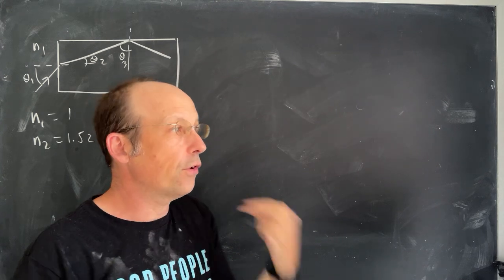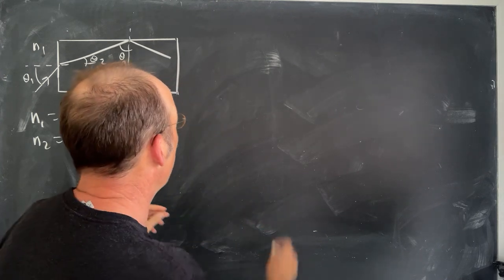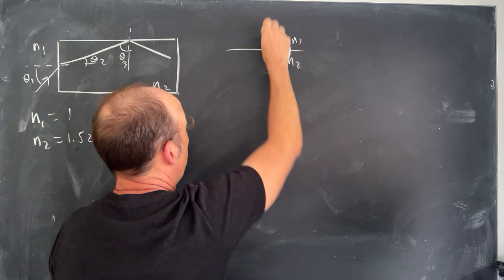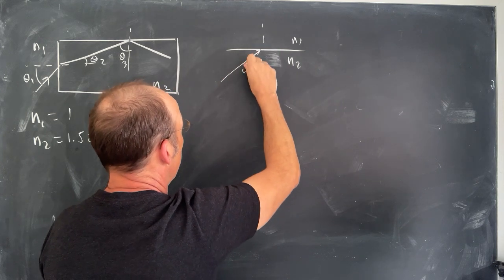Okay, so the first question that we need to think about is what is total internal reflection? So if I have some material N2 here, N1 right there, and then I have, I'm going to draw my light ray coming in right here. I'll call it theta 3.